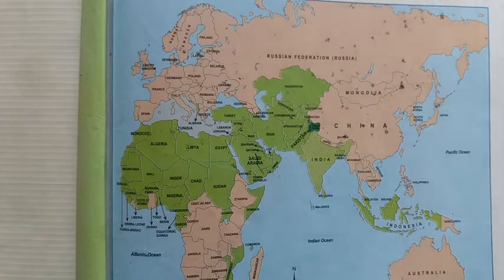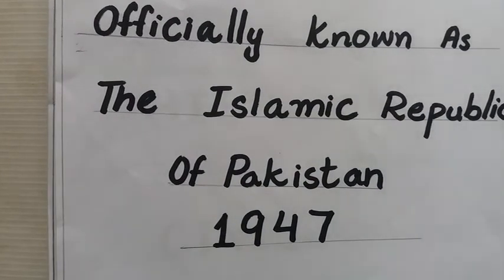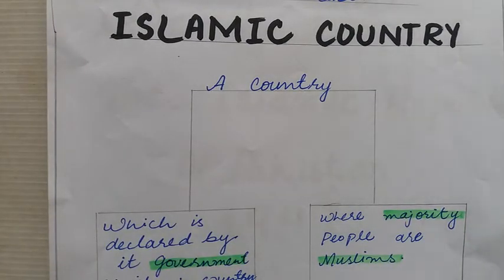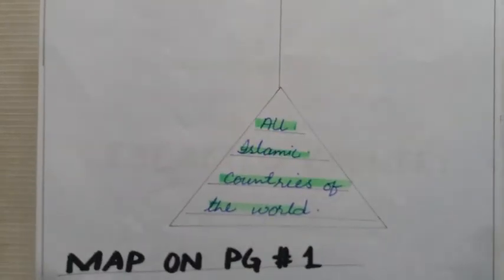I hope that today you people understood the definitions of social studies, geography, history and civics. You should know the official name of Pakistan, the location of Pakistan, what is meant by an Islamic country — a country where the government declares it as Islamic and where the majority of people are Muslims — and that all Islamic countries together are known as the Islamic block. That's all for today. We will continue this chapter in our next video. Stay safe, stay home, take care. Allah Hafiz.